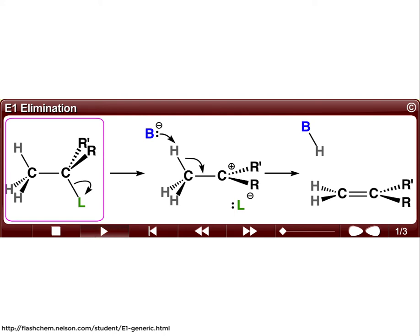Hi there. In this video we're going to talk about the orbitals involved in the E1 elimination reaction. Let's review the mechanism to start. We have an alkyl halide with L representing a leaving group.